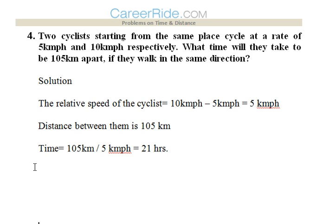Fourth question: two cyclists starting from the same place cycle at the rate of 5 km per hour and 10 km per hour respectively. What time will they take to be 105 km apart if they move in the same direction?